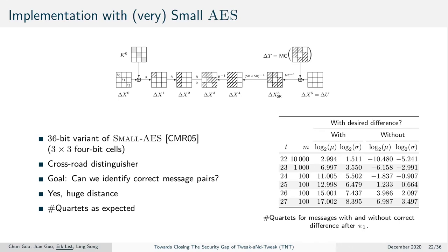Since the attack is infeasible to implement with 5-round AES, we considered a scaled-down variant using a 3×3 version of small AES with 36 bits. We applied the crossroad distinguisher and asked: can we correctly identify correct message pairs? We measured the number of quartets from message pairs whose difference lies in the desired tweak difference space versus those that do not. Our results matched our expectation, showing a large distance between the quartet counts for pairs with and without the desired difference after π1.